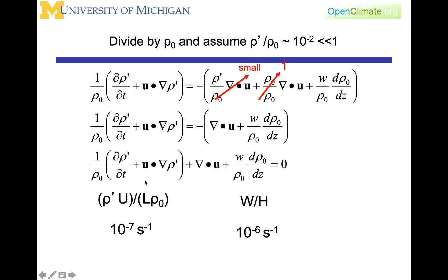If we then use our scaling parameters for ρ′, u, length, and ρ₀, and the relationship of ρ′ to ρ₀, then we get that this term is 10⁻⁷ per second, and this term, w over H, is 10⁻⁶ per second. So they're within about an order of magnitude of each other.